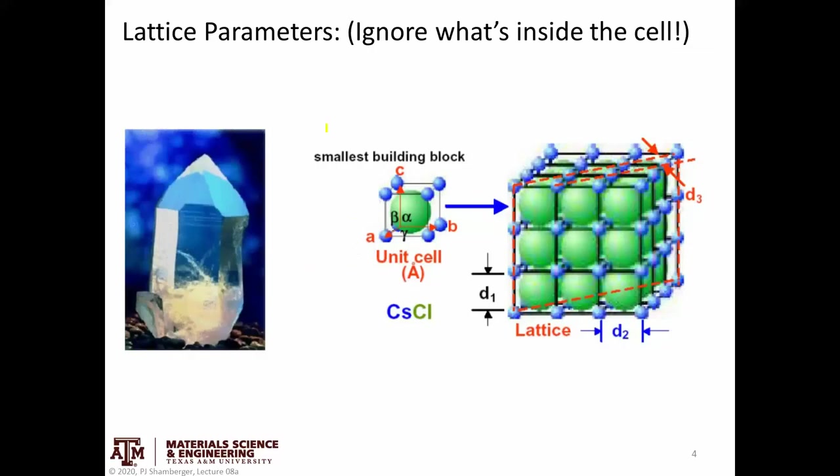In order to determine lattice parameters, fundamentally we can pretty much ignore what's inside the unit cell for now. This is not totally true. We'll talk about structure factors later on. But for the moment being, we can ignore what atoms are where and really just focus on the lattice parameters. So the lengths and the angles between the three principal lattice vectors.